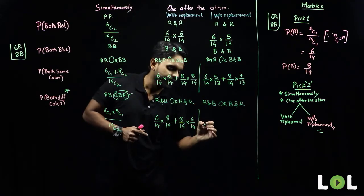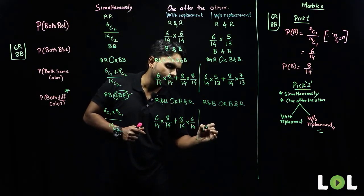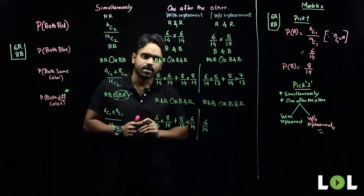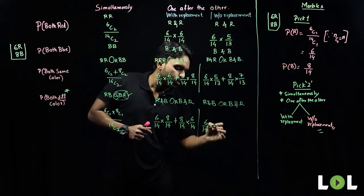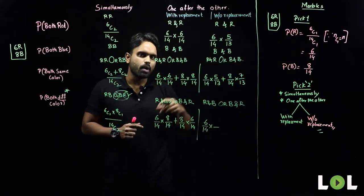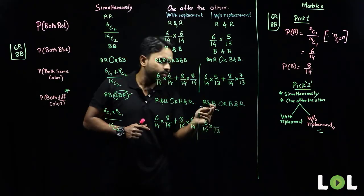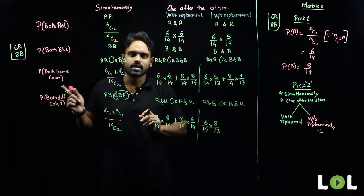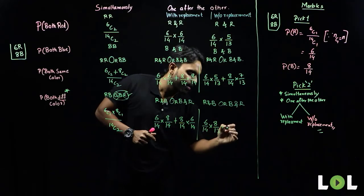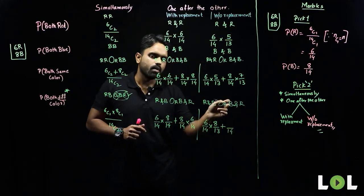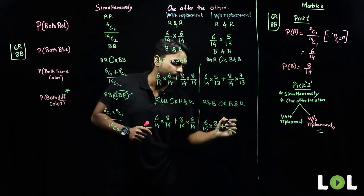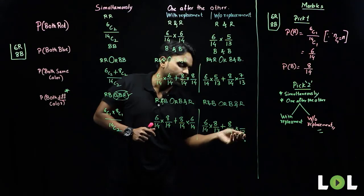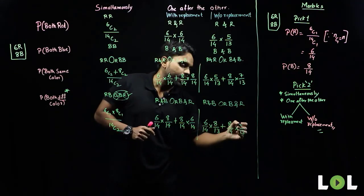For one after the other without replacement — pay attention, this is a bit tricky. Total number of cases is fourteen, favorable cases for red is six; then total cases reduce by one to thirteen, but favorable cases for blue remain the same at eight. Or: total cases fourteen, favorable blue eight; total reduces to thirteen, and red remains six.